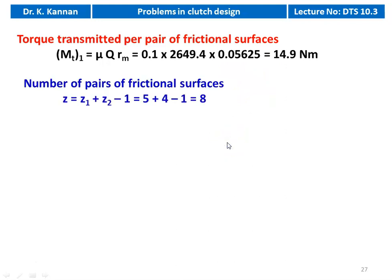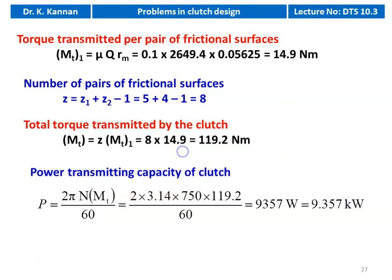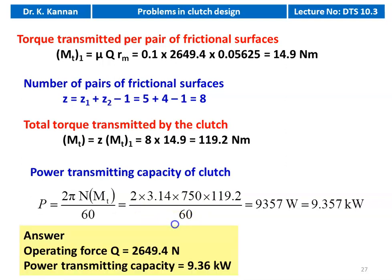Number of pairs of frictional surfaces Z equals Z1 plus Z2 minus 1: 5 plus 4 minus 1 equals 8. Total torque transmitted by the clutch equals Z into MT1: 8 into 14.9 equals 119.2 Newton meter. Power transmitted capacity P equals 2 pi N into MT divided by 60: 2 into 3.14 into 750 into 119.2 divided by 60 equals 9357 watts or 9.357 kilowatt. The operating force Q equals 2649.4 Newton and the power transmitting capacity is 9.36 kilowatt.